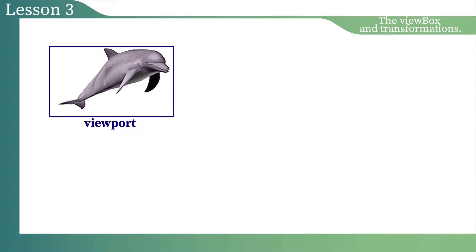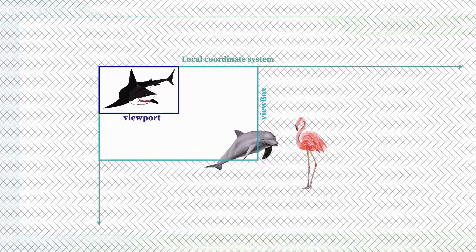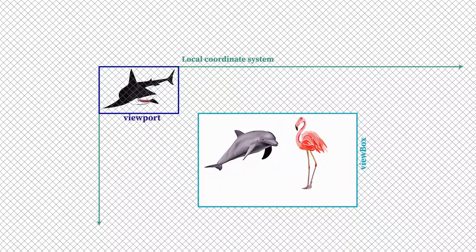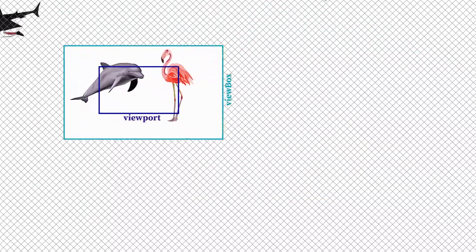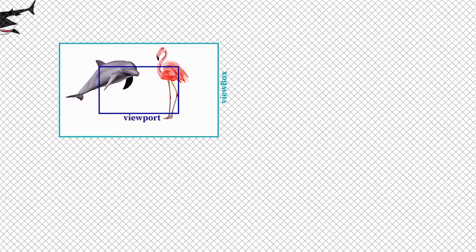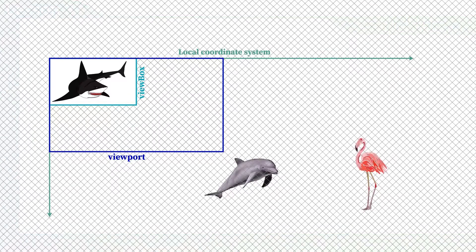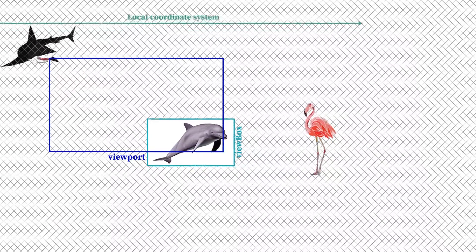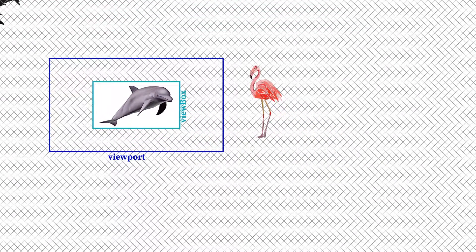But what if the size of the viewbox is larger or smaller than the viewport but has the same aspect ratio? If the viewbox is larger than the viewport, the user agent proportionally decreases the size of the viewbox and the local coordinate system with its content until the viewbox completely fits into the viewport. If the viewbox is smaller than the viewport, the user agent will increase the size of the viewbox and the local coordinate system with its content until it completely fits into the viewport.